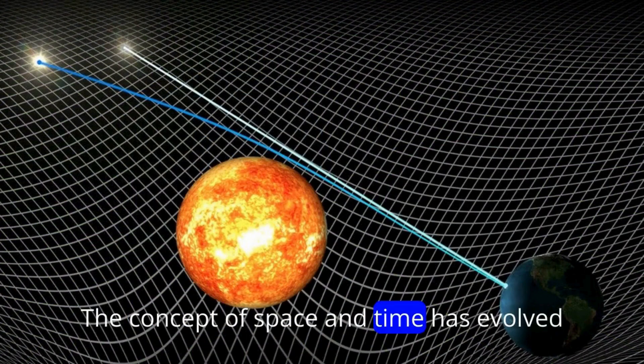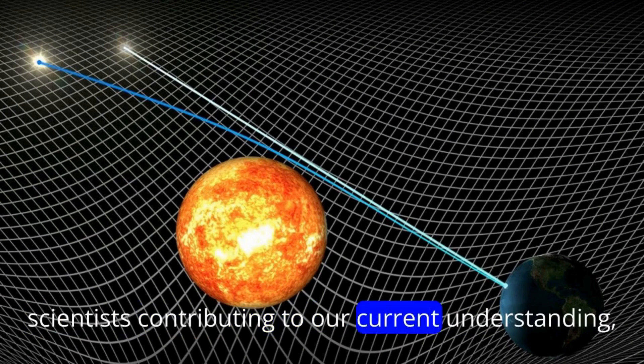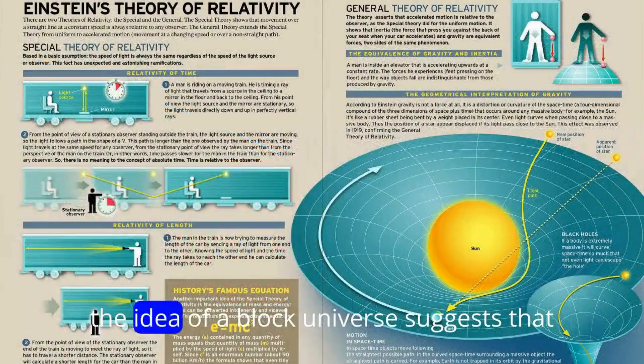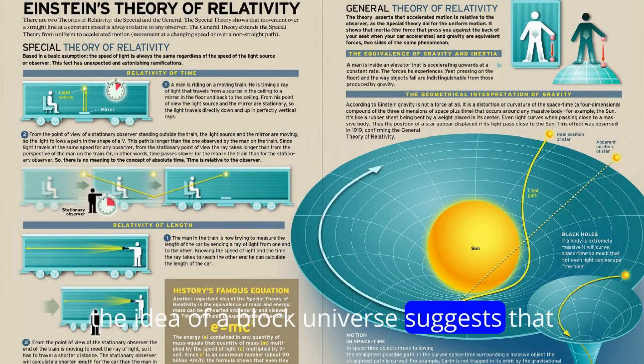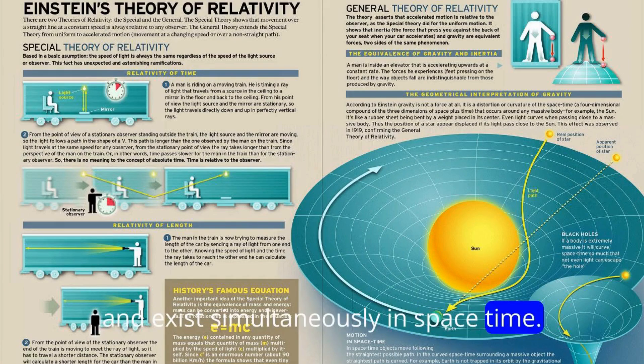The concept of space and time has evolved over centuries, with philosophers and scientists contributing to our current understanding. The idea of a block universe suggests that all events in time are already determined and exist simultaneously in spacetime.